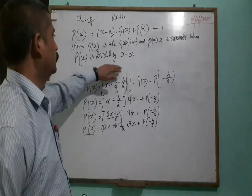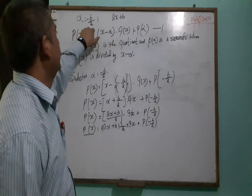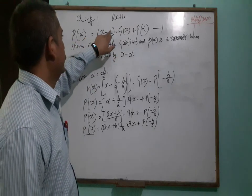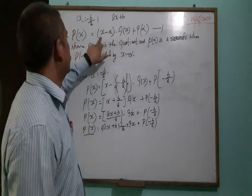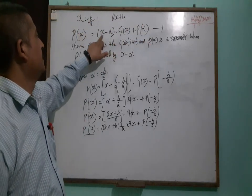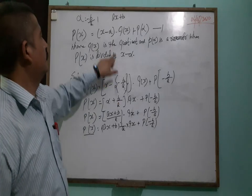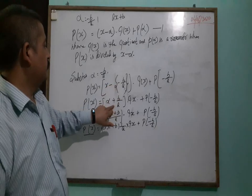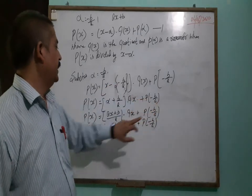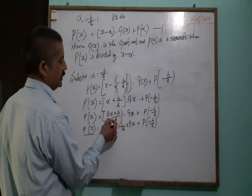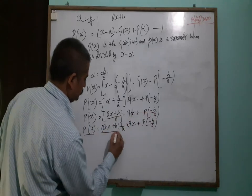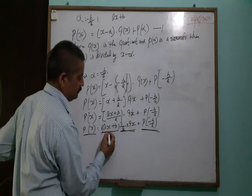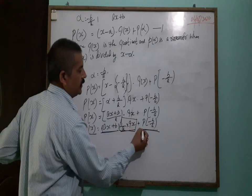So how to prove that: we say that alpha equals to minus b by a is the zero of ax plus b. So if we divide p(x) by the divisor, we get a quotient and a remainder. If we put the value alpha equals to minus b by a into the equation, then the result gives us: p(x) equals 1 by a into Q(x), and the remainder is p(minus b by a).